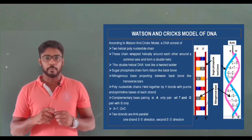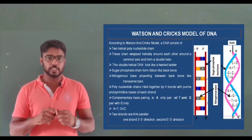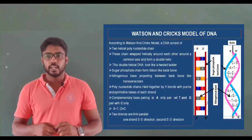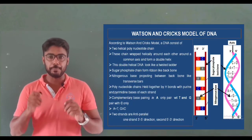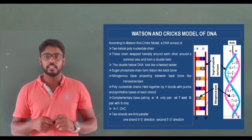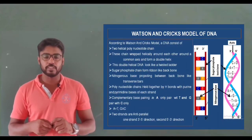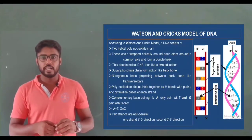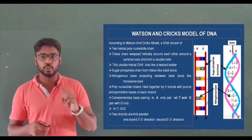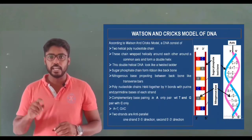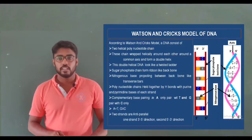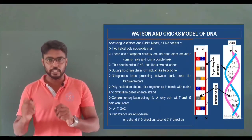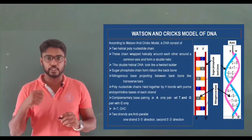The two polynucleotide chains are held together by hydrogen bonds between purines and pyrimidines of the two strands. The bases show complementary base pairing: adenine binds only with thymine and guanine binds only with cytosine. Adenine binds with thymine by two hydrogen bonds and guanine binds with cytosine by three hydrogen bonds. The two strands in DNA are anti-parallel — one strand runs in the 3' to 5' direction and the other strand runs in the 5' to 3' direction.